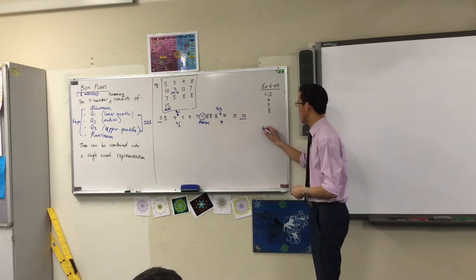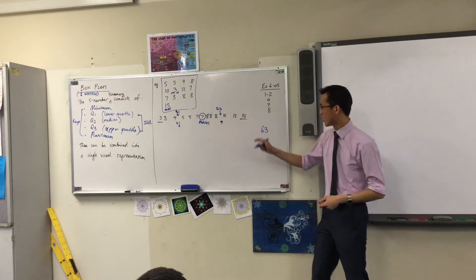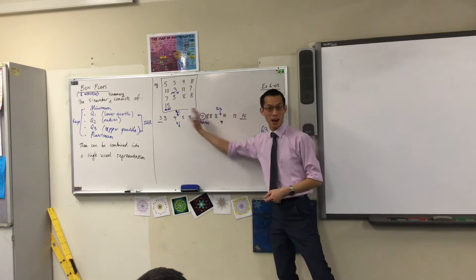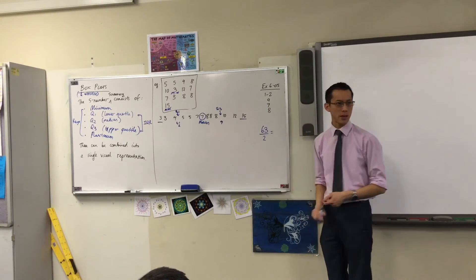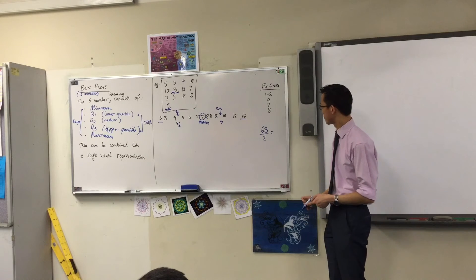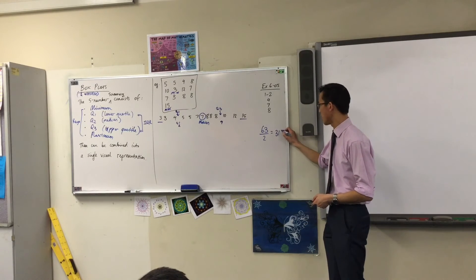I know it's going to have to be something to do with halving, because I'm trying to get half on this side and half on that side. When you halve 63, you can tell me, what do I get? 31 and a half.